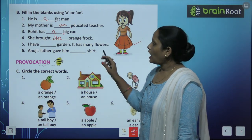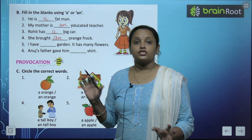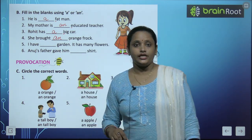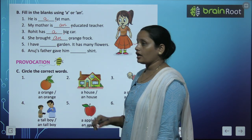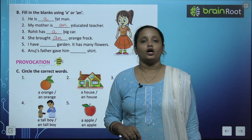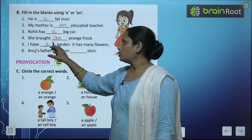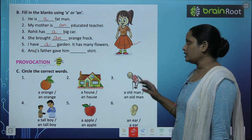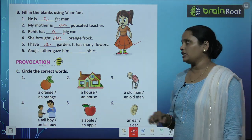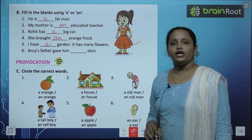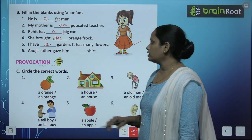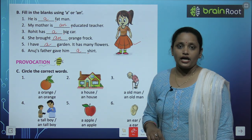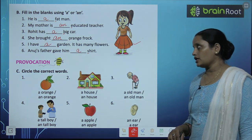Next — I have a Garden. Garden का G एक consonant है, तो A Garden. I have a Garden and it has many flowers. Anant's father gave him a shirt — S is a consonant.